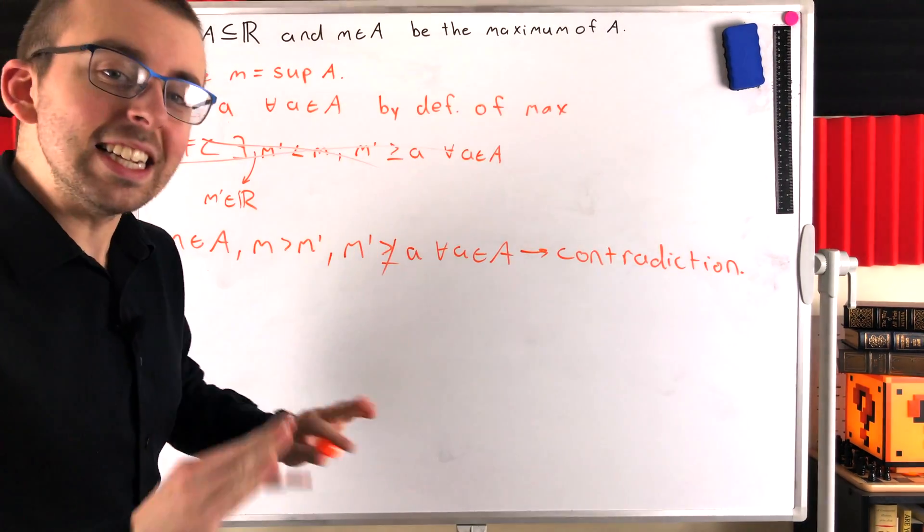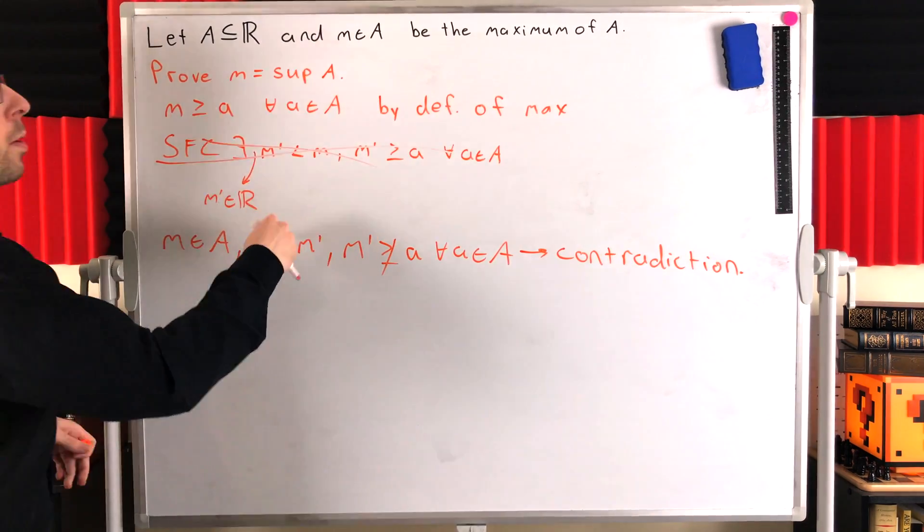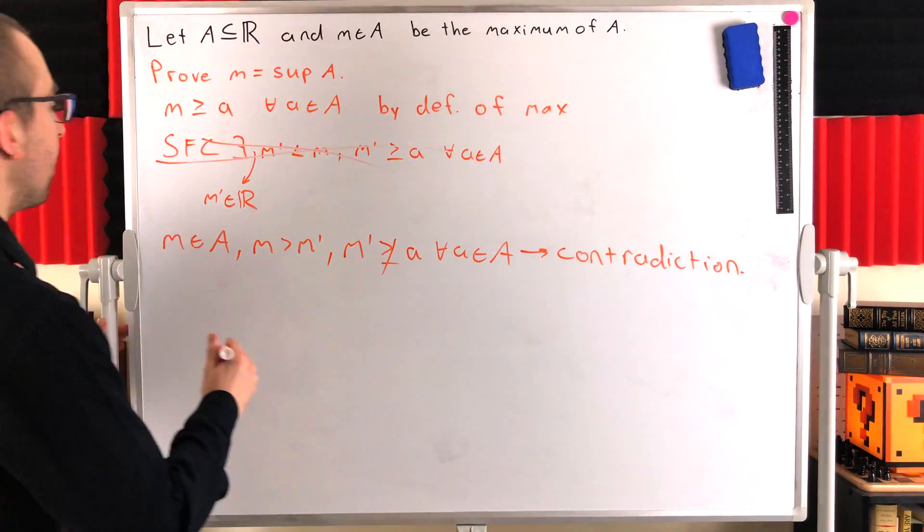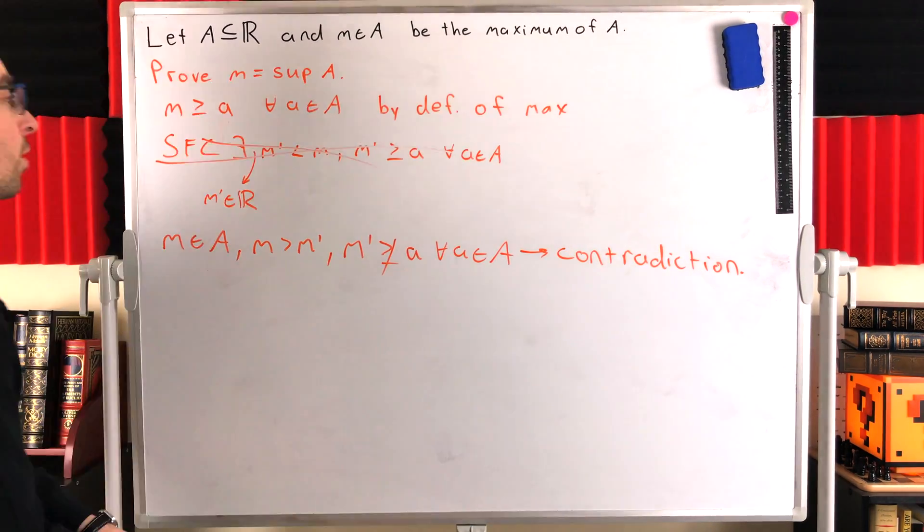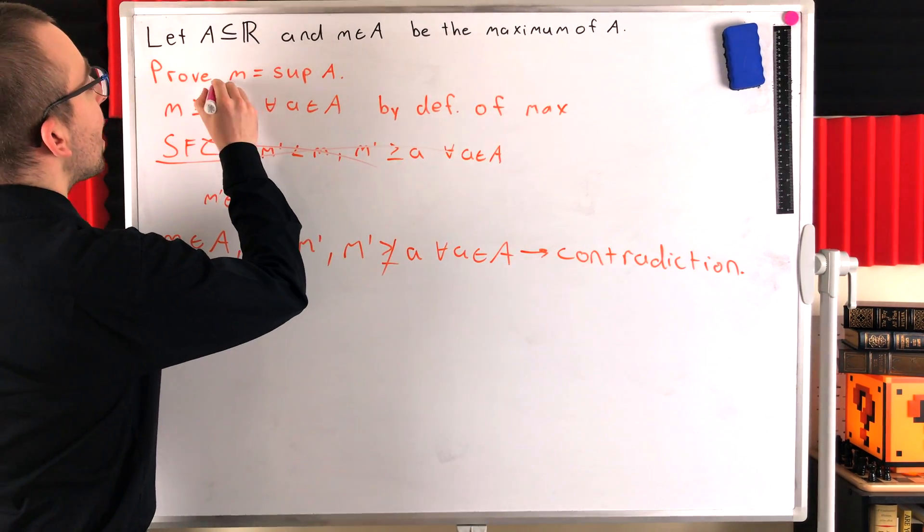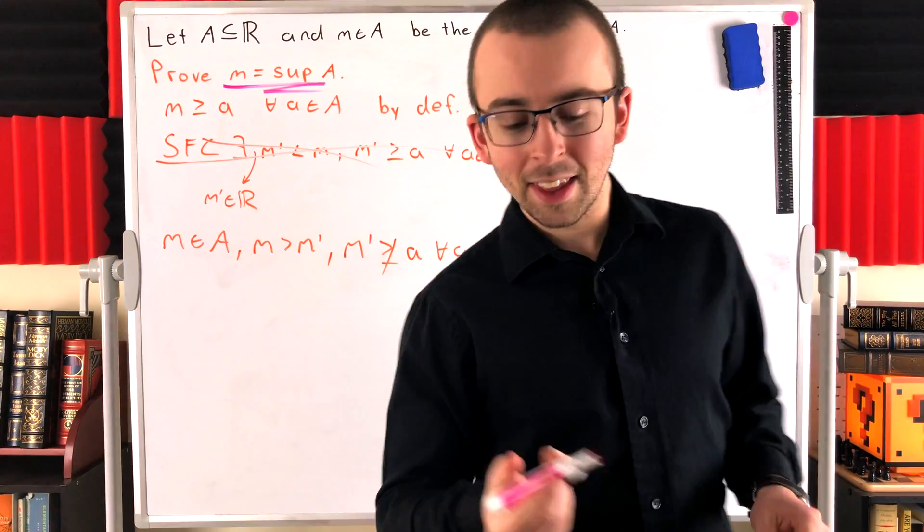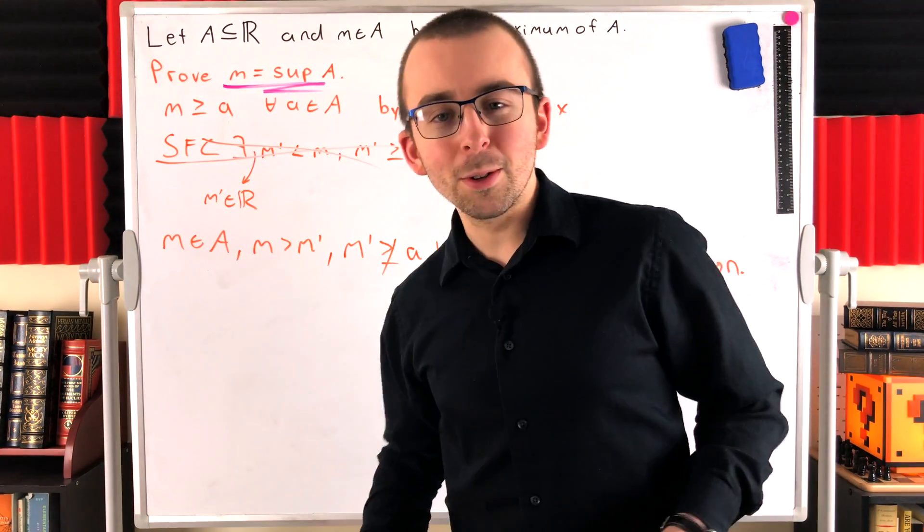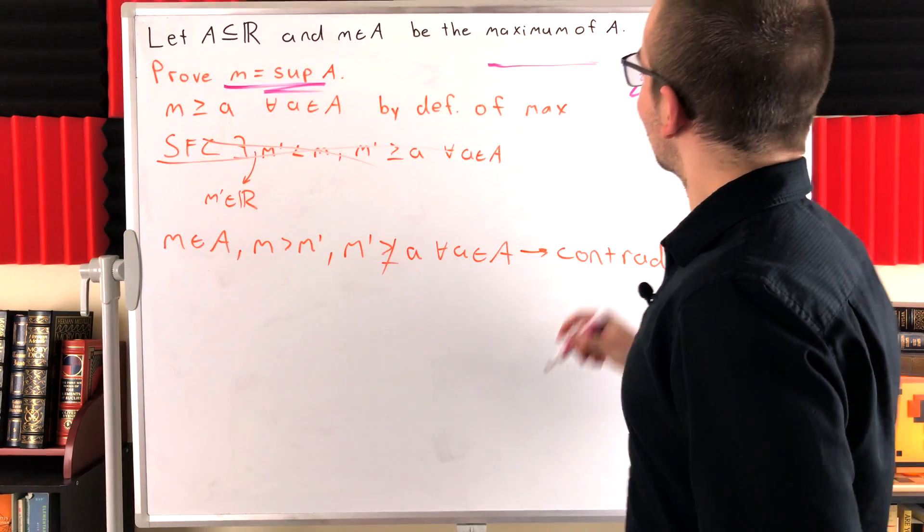Contradiction, and so clearly this can't be true. So in fact there is no upper bound that's less than M. That's what we supposed which led to a contradiction. Thus we can conclude indeed that's the proof: M the maximum is equal to the supremum of A. Kind of like that sort of bold stroke you get when you hold the marker flat against the board. Wonderful.